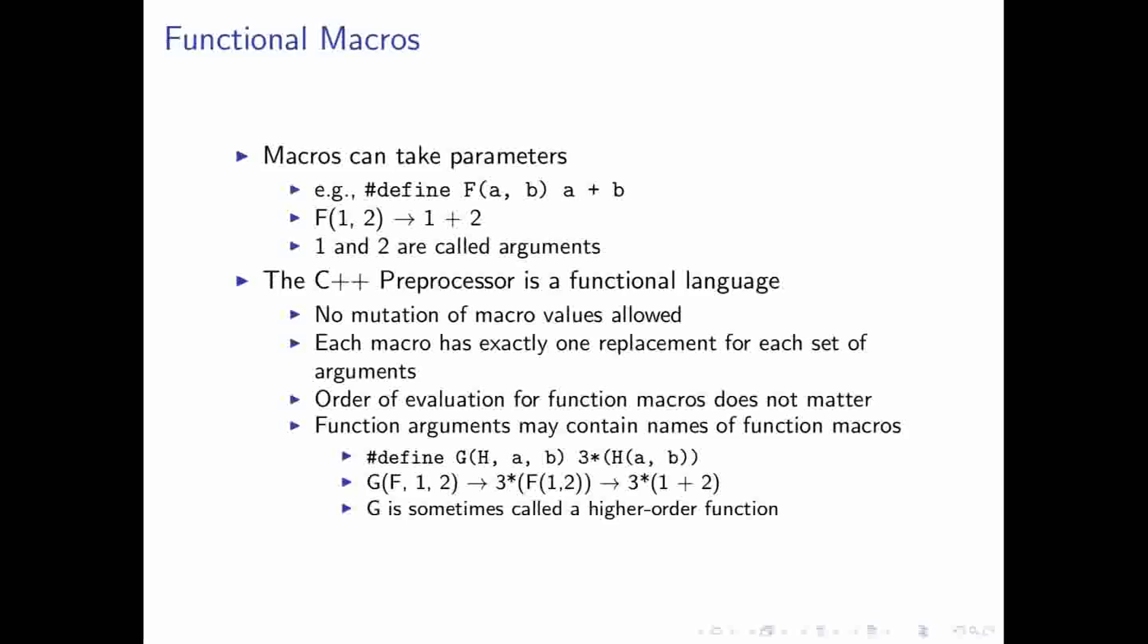So, 1 and 2 are called the arguments of f in this case. And another interesting thing about the C++ preprocessor is that it's also a functional language, which means a couple of things. The first is that there's no mutation of macro values. And you also have exactly one replacement for each set of arguments. So, this is kind of analogous to the functions that you learned about, perhaps, in Algebra or Algebra 2.